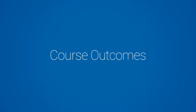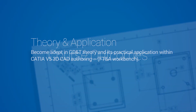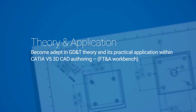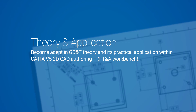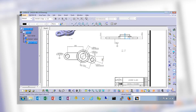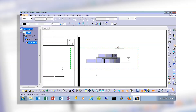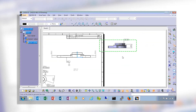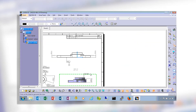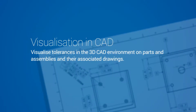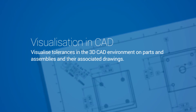you will understand GD&T theory and be able to practically apply it to the CATIA V5 3D authoring or FTA workbench. Visualize tolerances in the 3D CAD environment on parts and assemblies and their associated drawings.